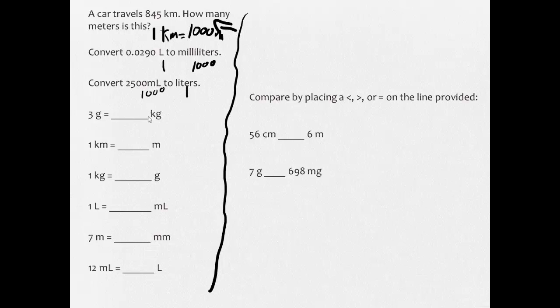1,000 milliliters is equal to 1 liter. 1,000 grams in a kilogram. 1,000 meters in a kilometer. 1,000 grams in a kilogram. 1,000 milliliters in a liter. 1,000 millimeters in a meter. And 1,000 milliliters in a liter.